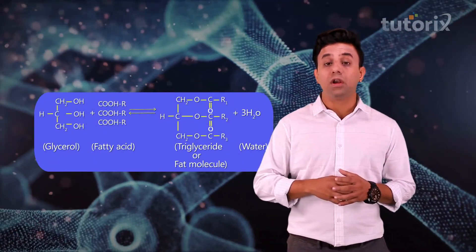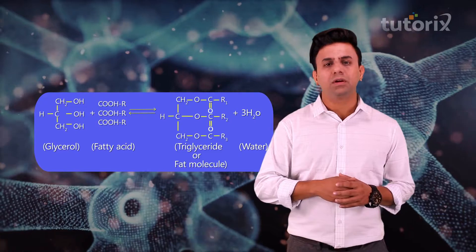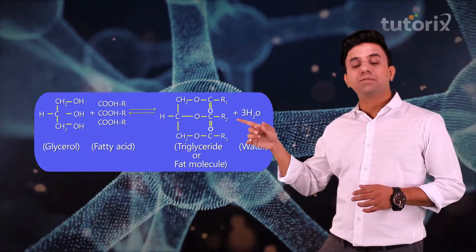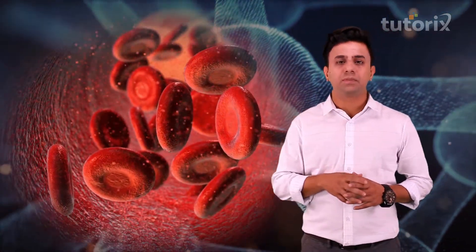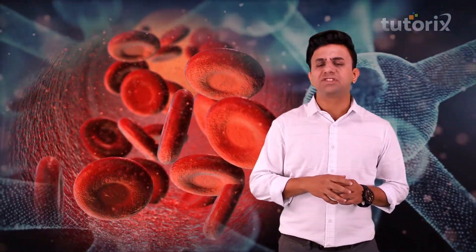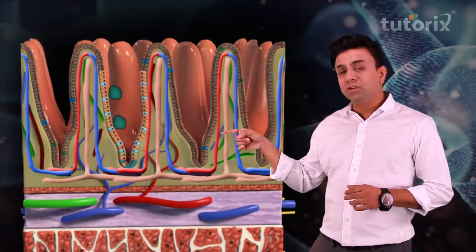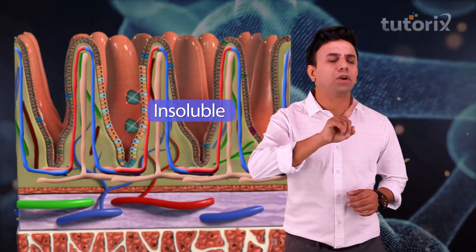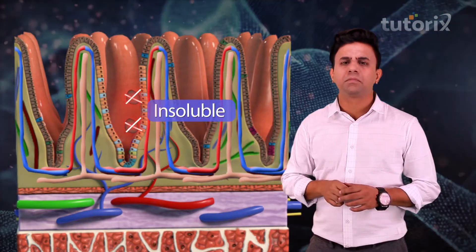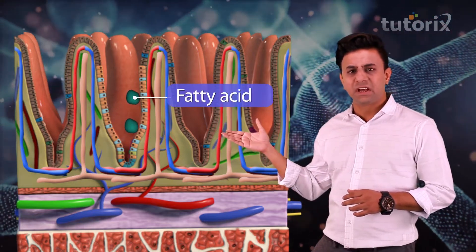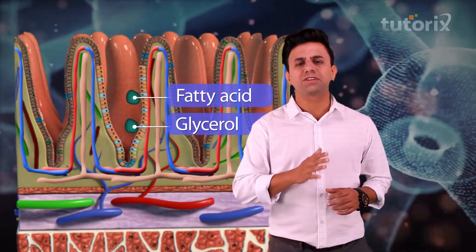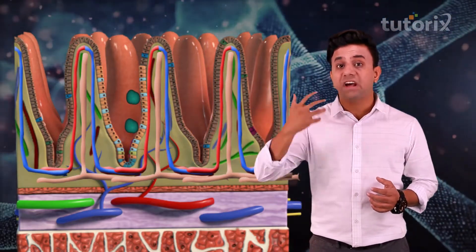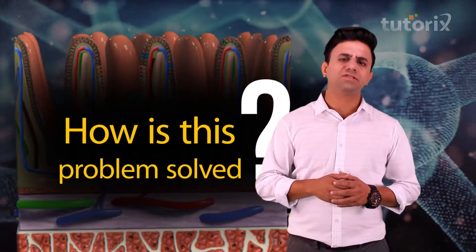The fat molecule is made up of fatty acid and glycerol. For the absorption of fat molecules, these two molecules have to be absorbed into the blood circulation. But there is a problem: both fatty acid and glycerol are insoluble — they are not soluble at all. Fat is a very important component of our diet and hence has to be absorbed, so how is this problem solved?